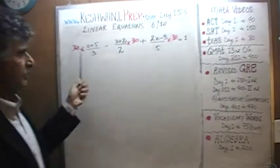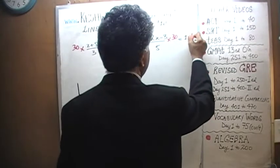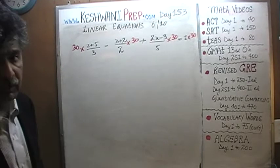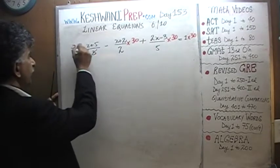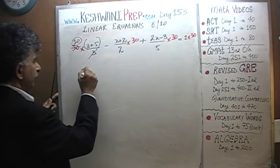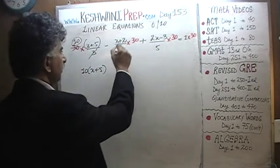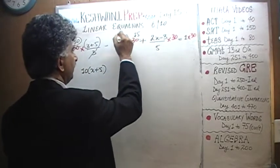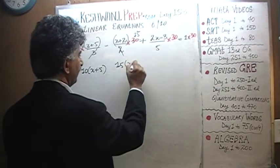And since we are multiplying this side of the equation by 30, we must multiply that side of the equation by 30 as well. Now we can get rid of our denominators. Divide top and bottom by 3, so 30 becomes 10 — we end up with 10 times x plus 5. Divide top and bottom by 2, so 30 becomes 15 — we end up with 15 times x plus 2.